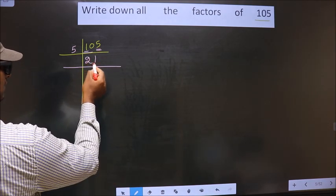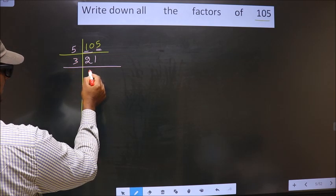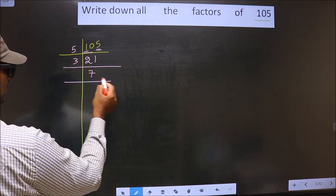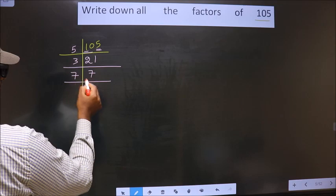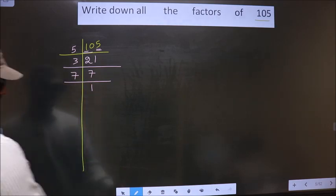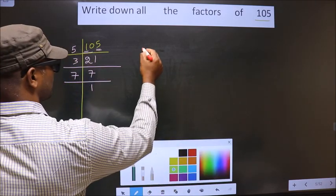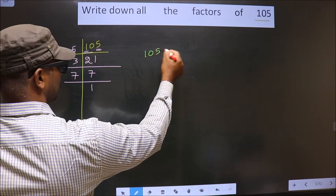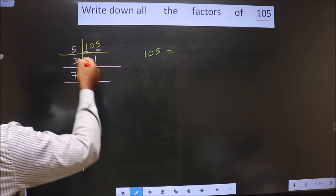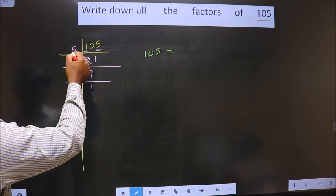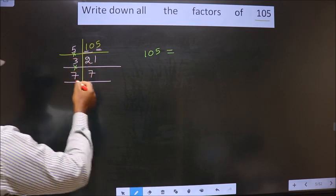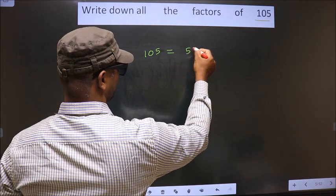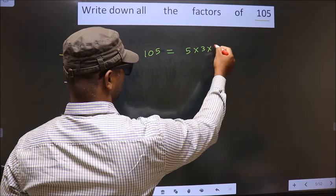So now here we have 21. 21 is nothing but 3 times 7. Now 7 is a prime number, so we take 7 once 7. So now 105 is equal to the product of these numbers, that is 5 into 3 into 7.